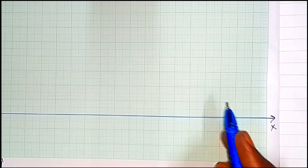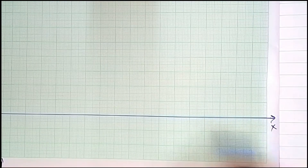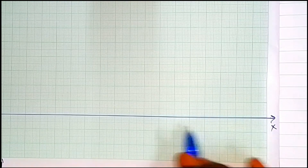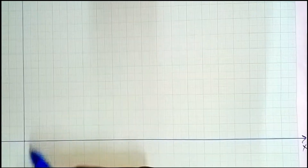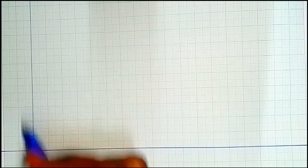So first, the x-axis is the horizontal line and the y-axis is the vertical line.